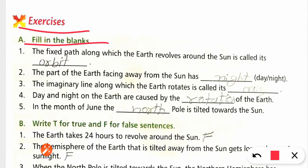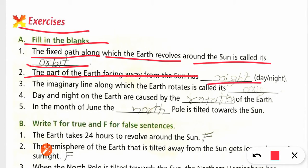First exercise is fill in the blanks. The fixed path along which the earth revolves around the sun is called orbit. The part of the earth facing away from the sun has night.